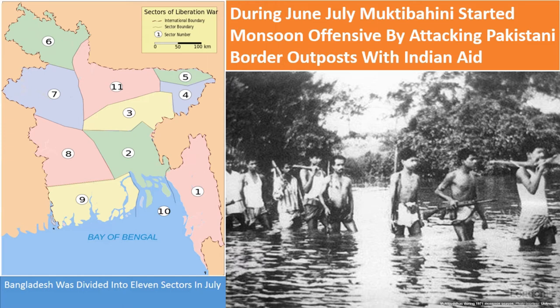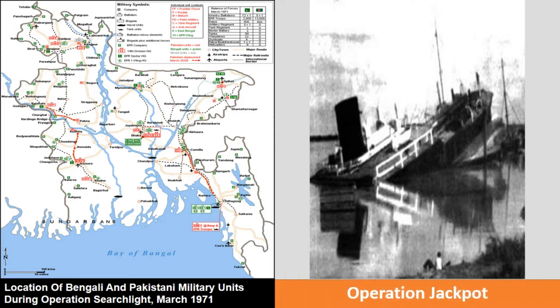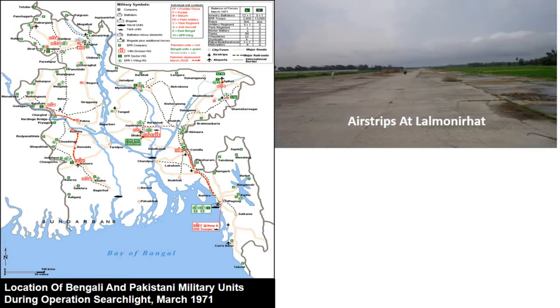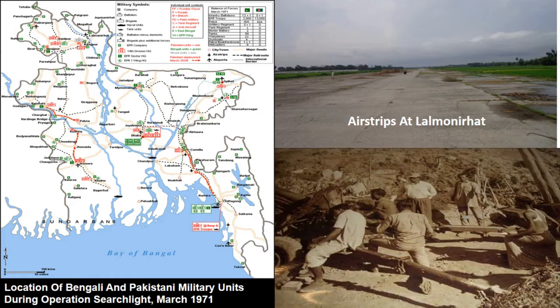During June–July, the Mukti Bahini started a monsoon offensive by attacking Pakistani border outposts with Indian aid, but the results were mixed and failed to achieve its objectives. The major success story was Operation Jackpot, in which naval commandos mined and blew up warships in Chittagong, Mongla, Narayanganj, and Chandpur on 15 August 1971. In October–December, 90 out of 370 Border Outposts fell to Bengali forces; guerrilla attacks intensified, as did Pakistani and Razakar reprisals on civilian populations. The Bangladeshi independence fighters managed to temporarily capture airstrips at Lalmonirhat and Sylhet, both used for flying in supplies and arms from India. Pakistan sent another five battalions from West Pakistan as reinforcements.